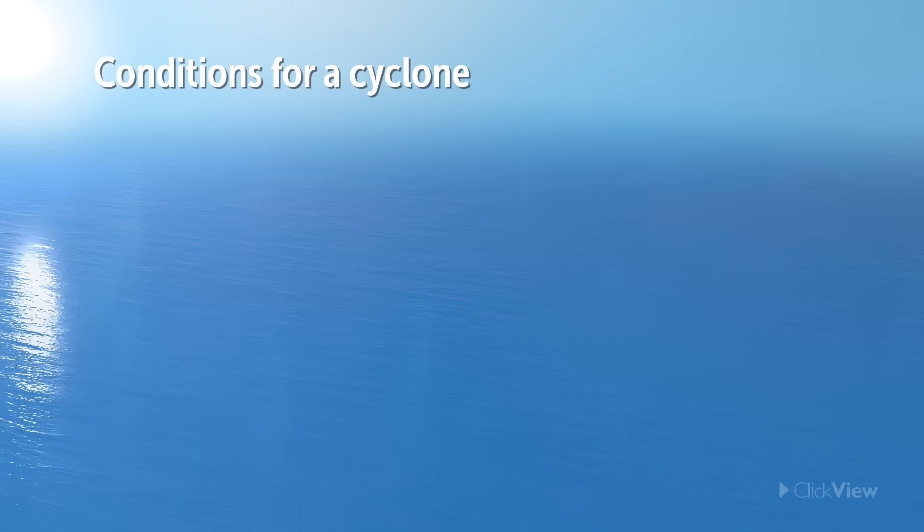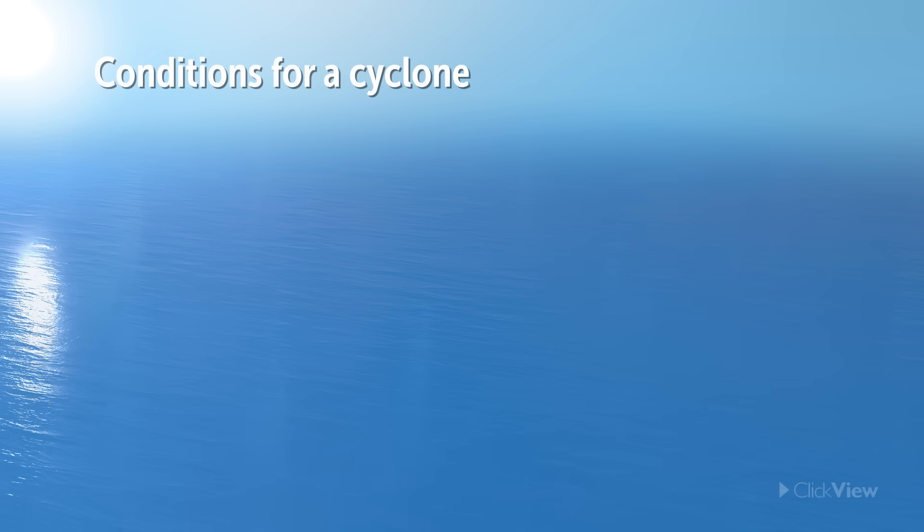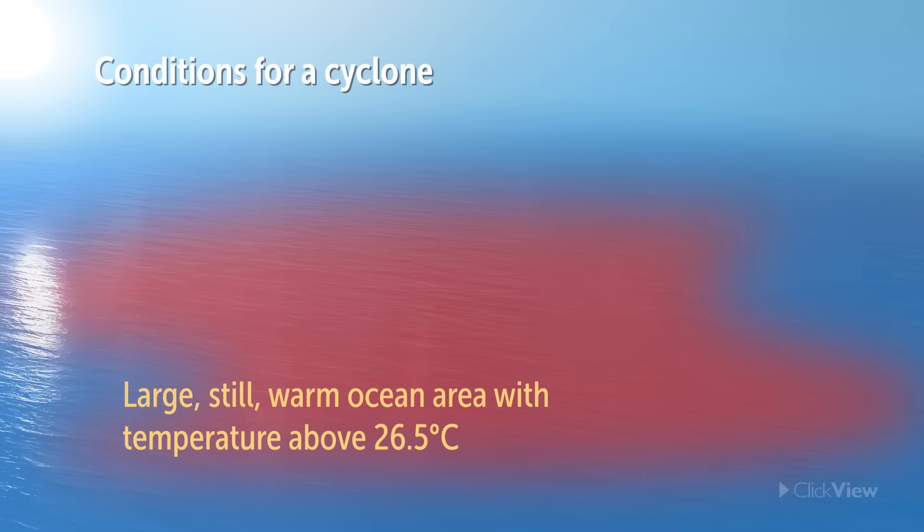The formation of a cyclone depends upon the following conditions coinciding. A large, still, and warm ocean area with a surface temperature that exceeds 26.5 degrees Celsius over an extended period. This allows a body of warm air to develop above the ocean's surface.